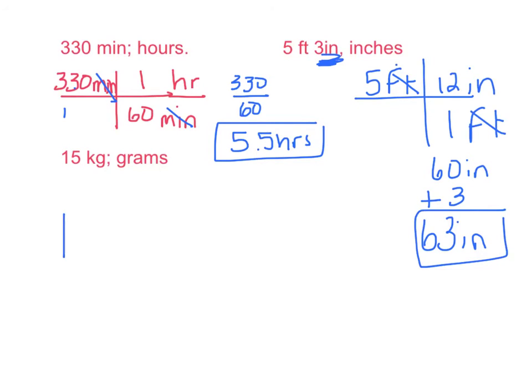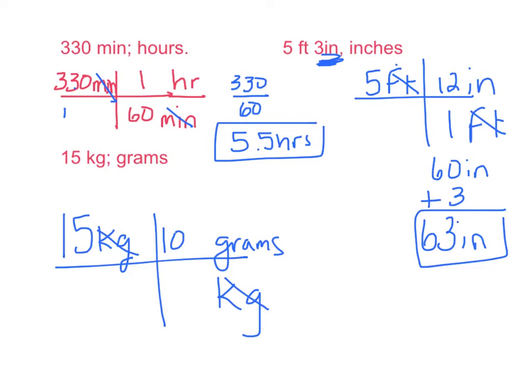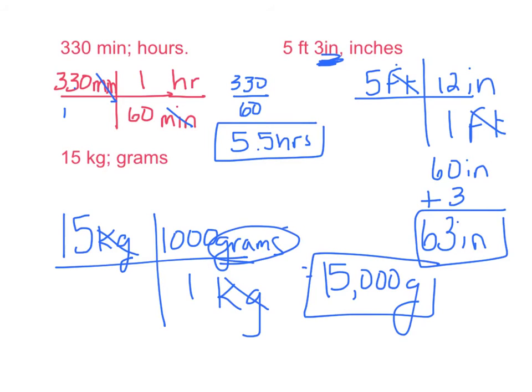15 kilograms. This one you may have to Google or look up if you don't know this. We want to get rid of kilograms and we want grams. Well how many grams are in a kilogram? There's 1,000. So there's 1,000 grams in 1 kilogram. So we take 15 times 1,000, and that would give you a measurement of 15,000 grams. And remember grams is what we wanted so that's the correct answer.